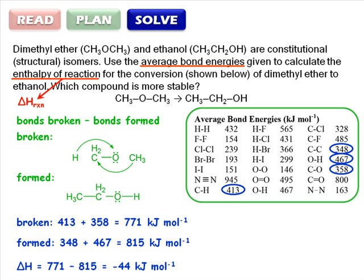Since the enthalpy is negative, we know that the reaction was exothermic and therefore ethanol is the more stable isomer.